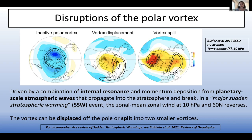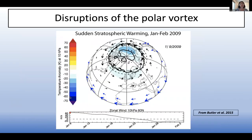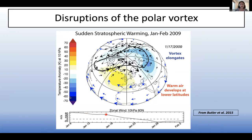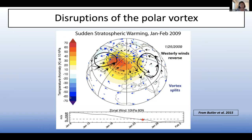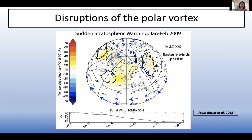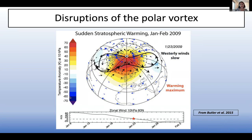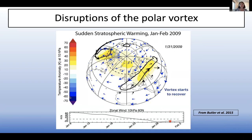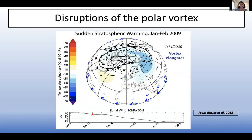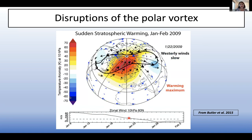Usually part of the vortex will go over North America and Canada, and the other part over Eurasia. When the zonal mean zonal wind not just decelerates but actually reverses direction, we call that a major event. There's a recent review by Mark Baldwin et al. in 2021. This animation shows what happens in the stratosphere during one of these events — the time series at the bottom tracks wind strength as the 2009 event proceeded. Around January 24th the wind actually reverses direction, which is a hemispheric phenomenon that really alters the entire stratospheric circulation.